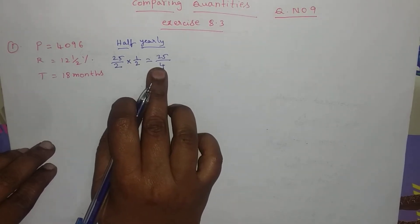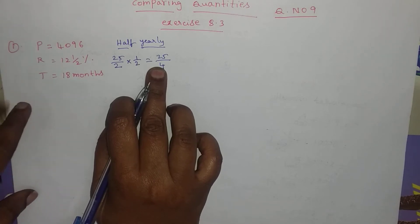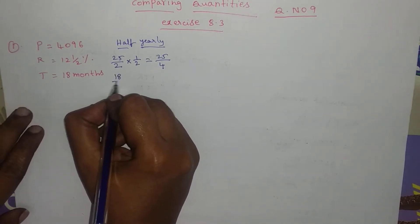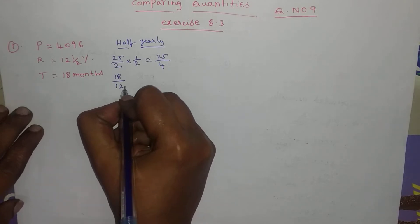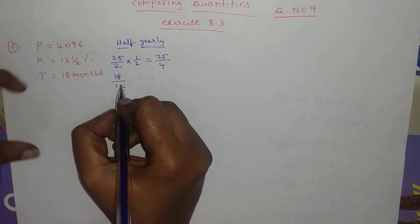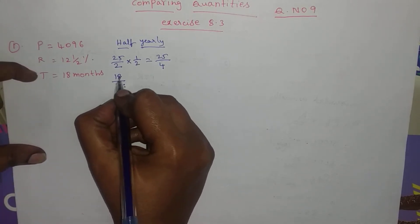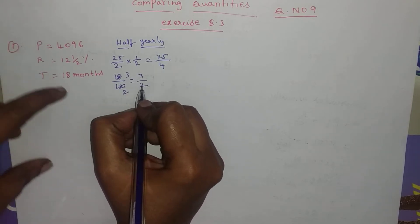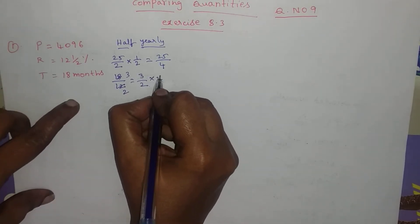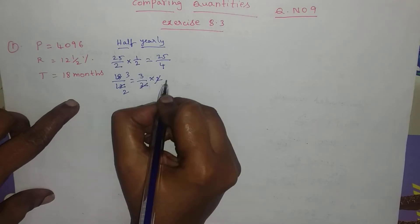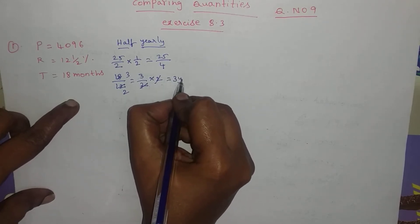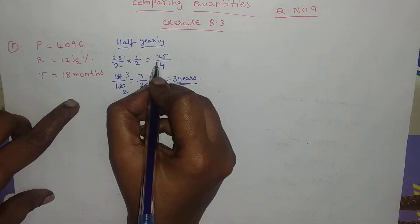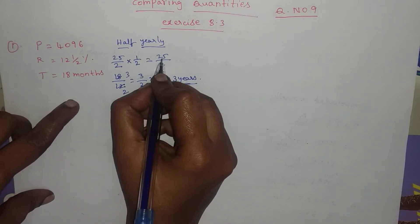Next, the time is 18 months. 18 by 12 equals 3 by 2, which is one and a half years. Since compounded half yearly, we double it: 3 by 2 multiplied by 2 gives 3. So the number of periods is 3.